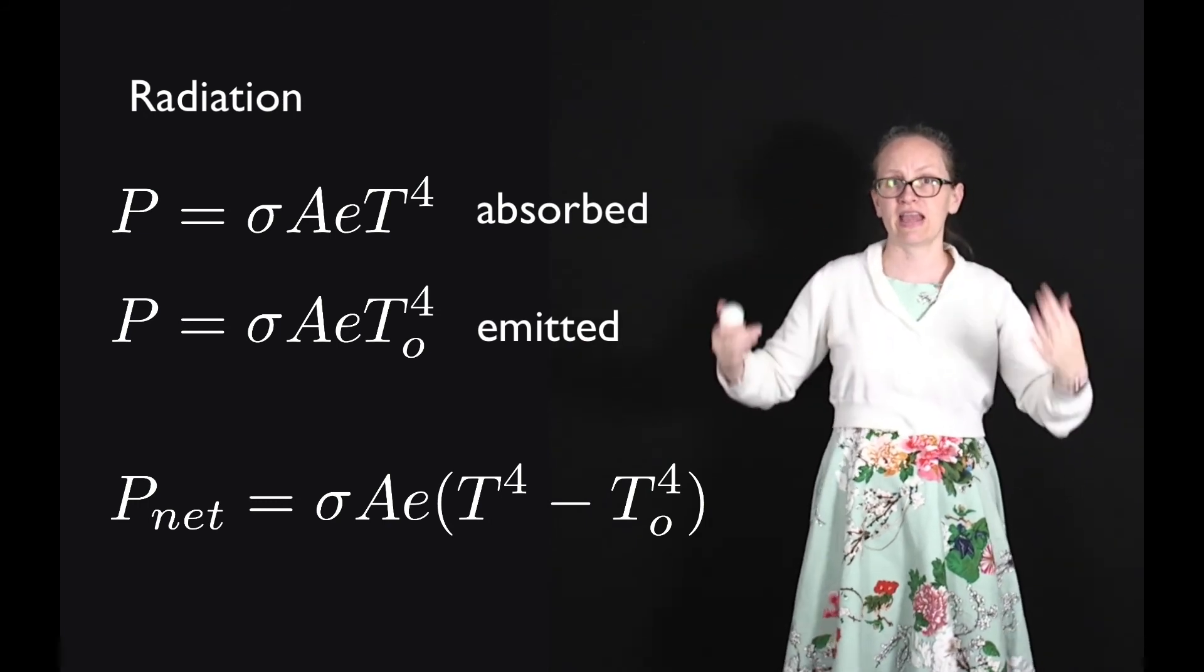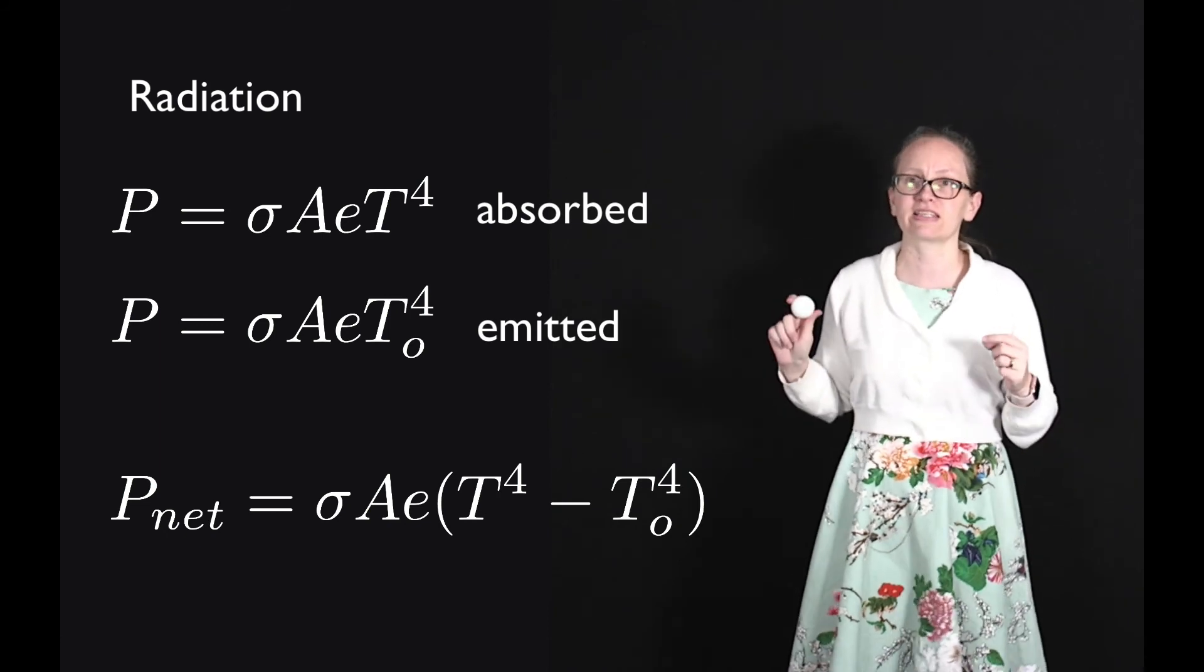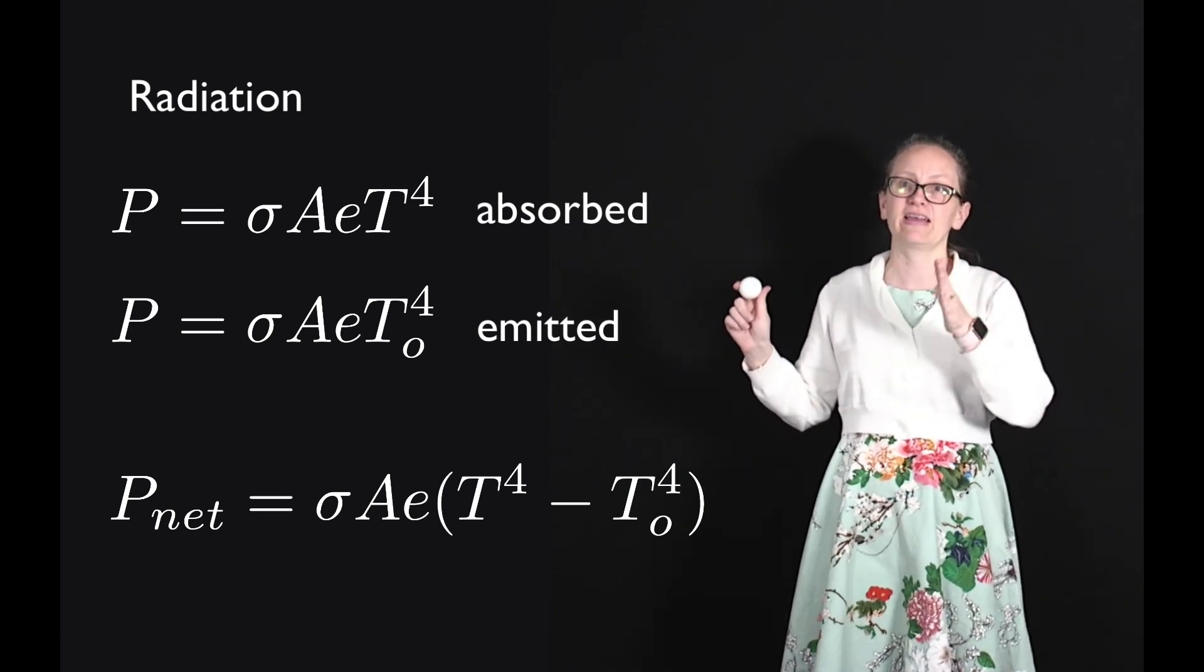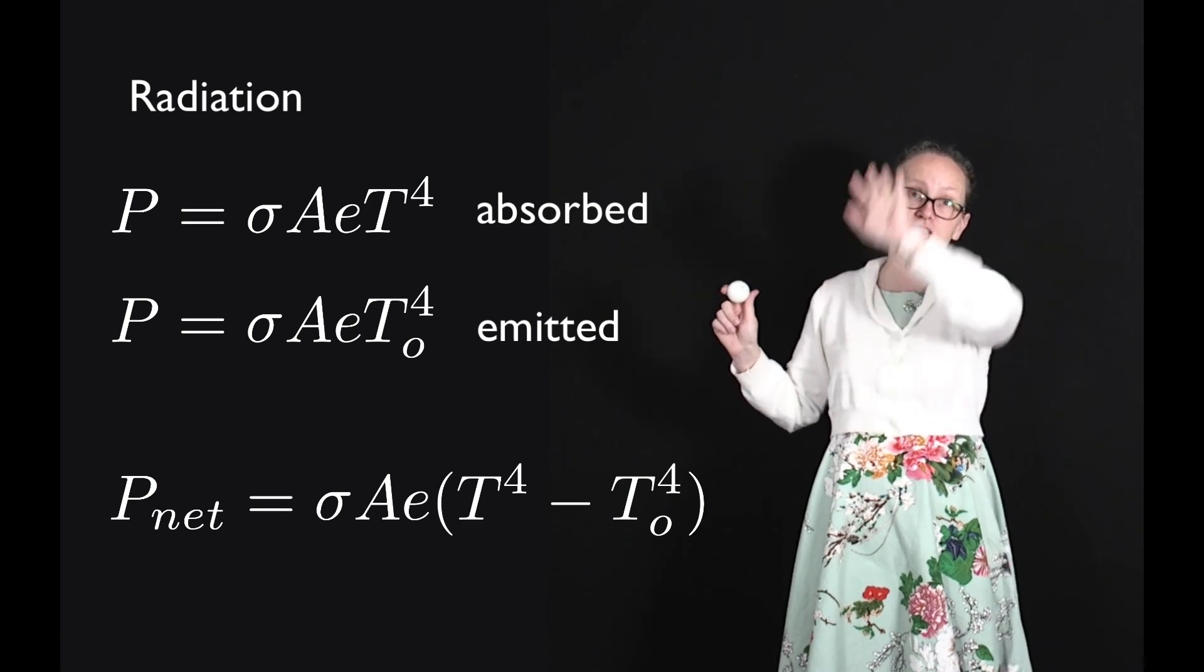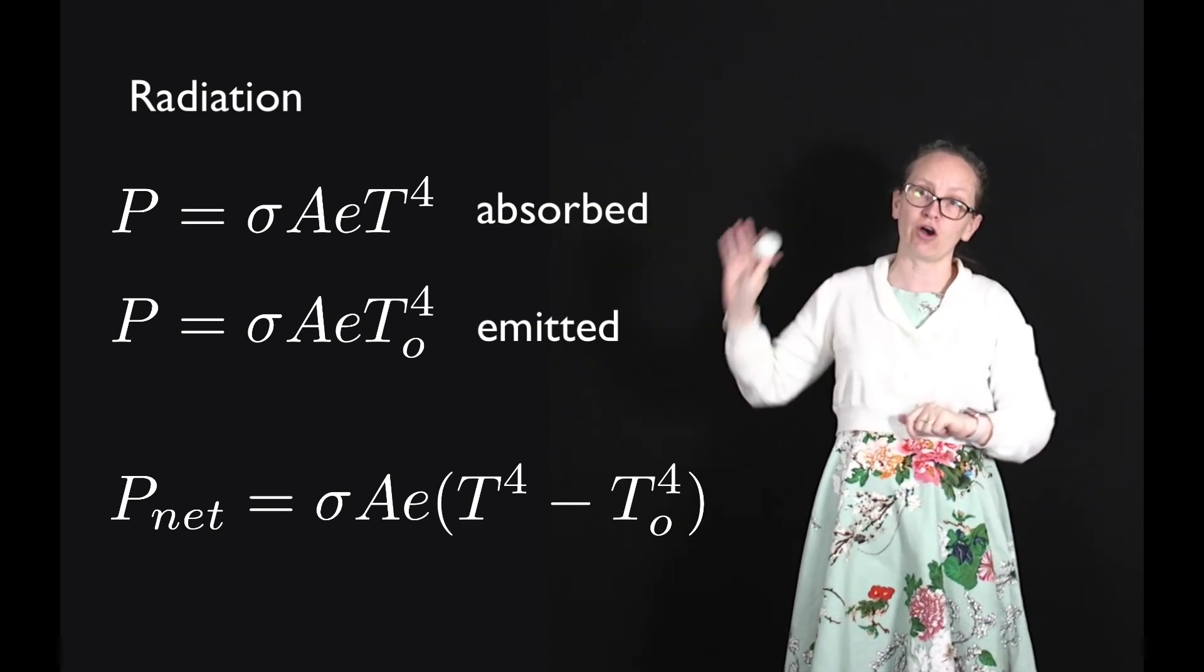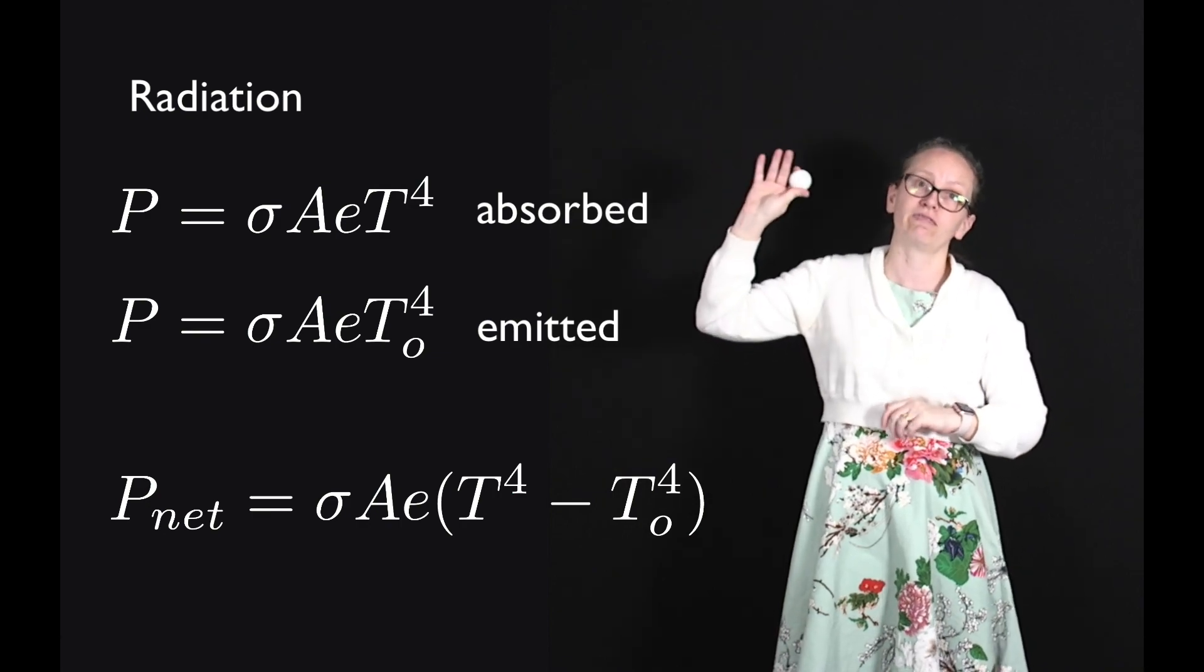The net rate of heat transfer from a body is given by sigma A e, where we've got T to the 4, which is the temperature of the surroundings to the power of 4, minus the temperature of the object to the power of 4.